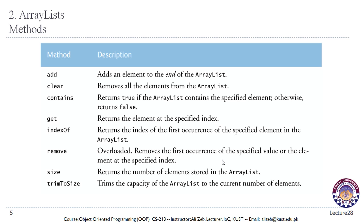ArrayList provides several methods: the add method adds an element to the end; clear removes all elements; contains returns true if the specified element is present; get returns the element at a specified index; indexOf returns the index of the first occurrence; remove is overloaded and removes either the first occurrence of a value or the element at a specified index; size returns the number of elements; and trimToSize trims the capacity to the current number of elements.